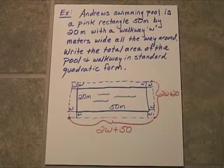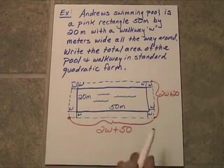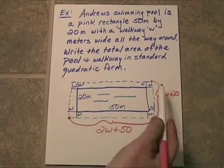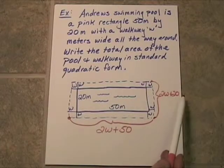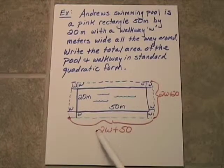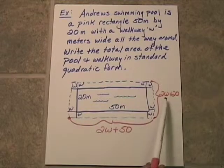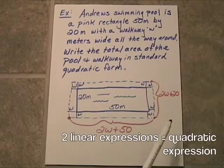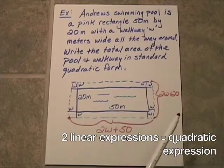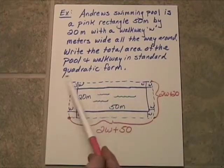Now, we're supposed to write the area. The area of this pool is going to be its length times its width. Now both of these are linear expressions. They're to the first degree. They're linear. When you multiply two linear expressions together, you will get a quadratic expression.